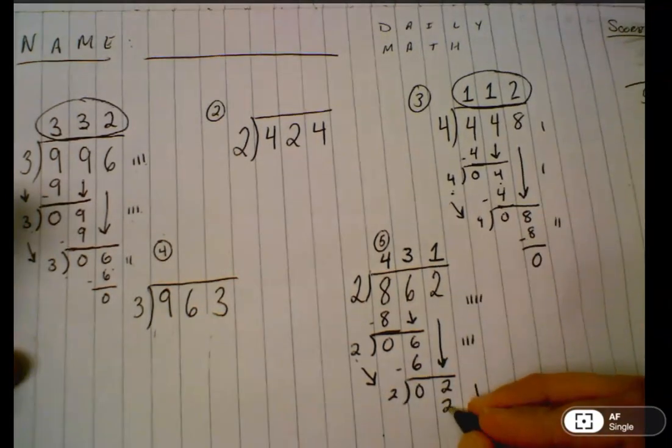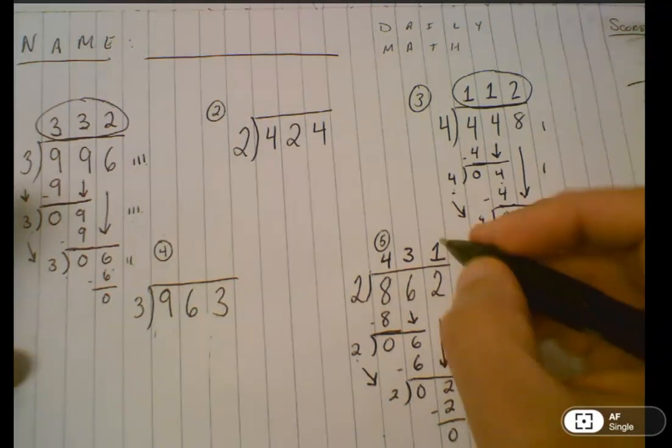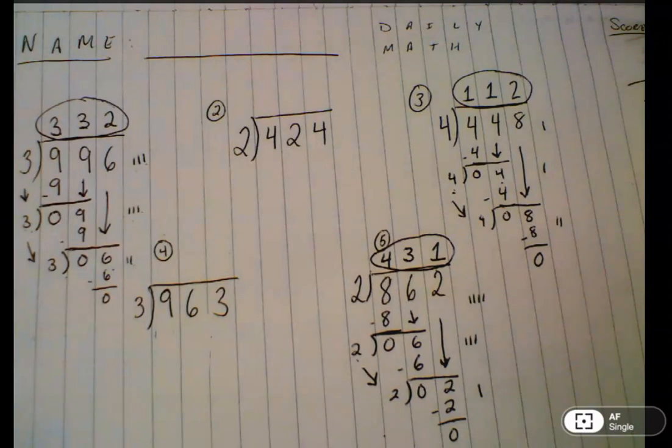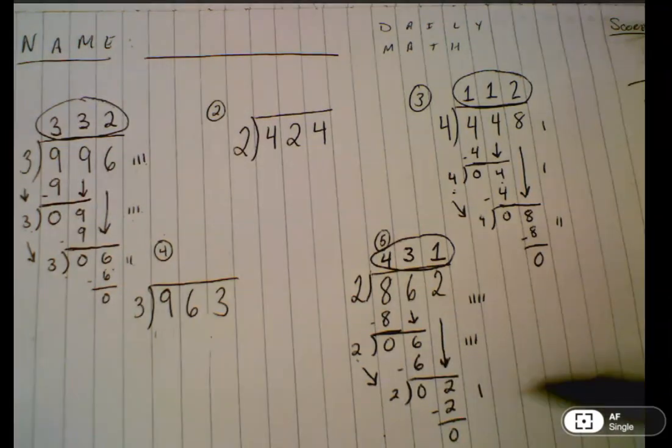Two times one is two. Subtract. You're left with zero. Your answer to number five is 431. So you can see the steps of division here. I also wanted to show you exactly how I'm showing the students to do it so they can show their work in their homework.